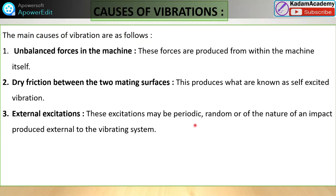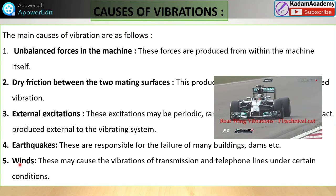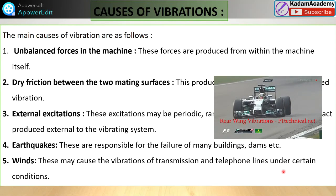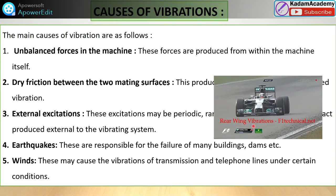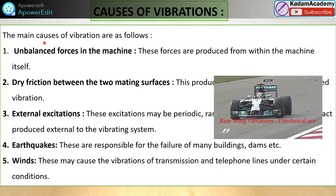Third, external excitation — these excitations may be periodic, random, or impact in nature, produced by an external vibrating system. Fourth, earthquakes — vibration due to earthquake can cause failure of seismic resistance and base vibration, causing buildings to vibrate. Fifth, winds — winds may cause vibration of transmission or telephone lines, as already seen in the Tacoma Bridge example. You can also observe rear wing vibration in this F1 car.